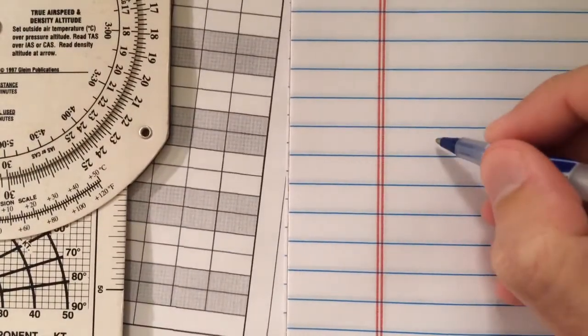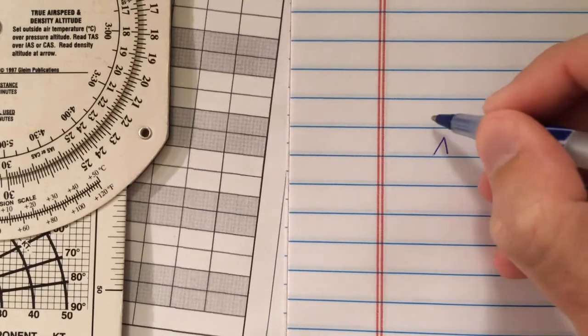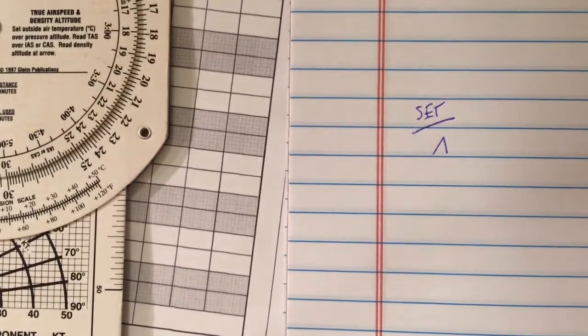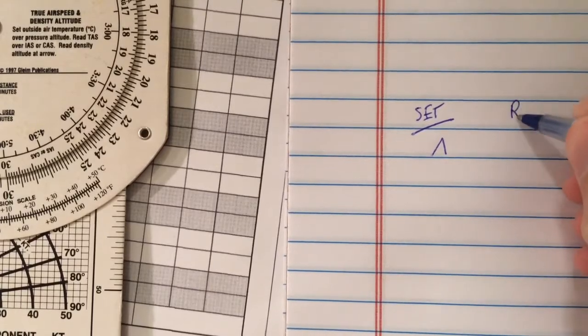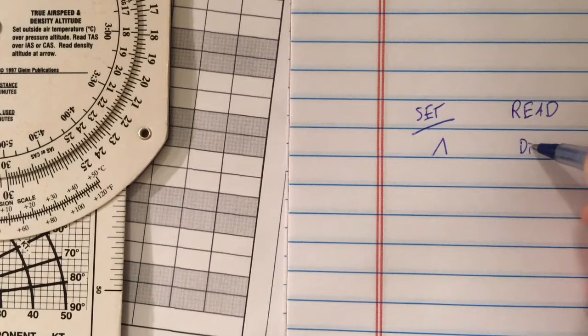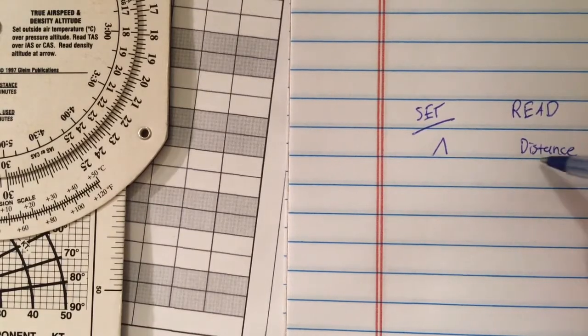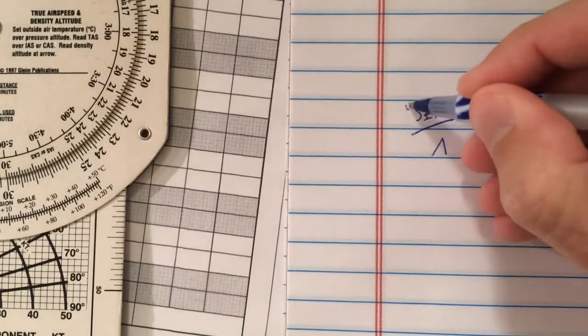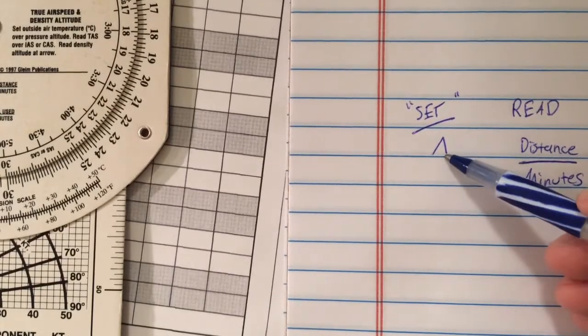Again, that was—think of the hat is what you set, and then you need to say to yourself: read whatever it is, distance over minutes.